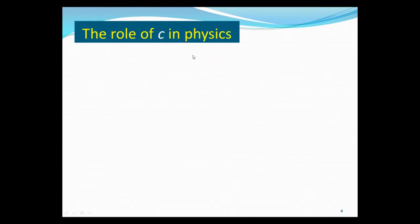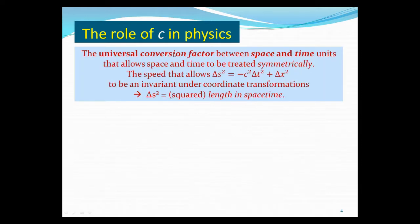Let's see the role c plays in relativity physics. First of all, c is a universal conversion factor. Remember we want to treat space and time symmetrically in relativity. To do that, you have to convert space and time back and forth, and c allows you to do that. So it's a universal conversion factor that allows space and time to be treated symmetrically. Also, putting c here in front of time allows you to form a quantity that's Lorentz invariant. This allows us to view this as a length, and c is the universal absolute maximum speed of signal transmission.